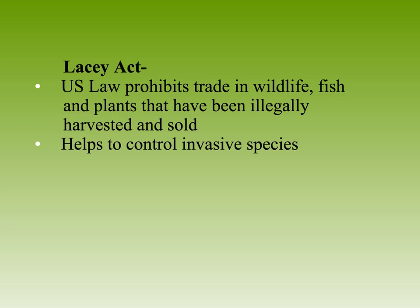Here are some ways we can restore habitats and try to get biodiversity back. Restoration tries to return things as close to the original as possible. Rehabilitation returns a degraded ecosystem back to being functional. Replacement is when the original ecosystem can't be recreated, so another ecosystem is introduced to bring some biodiversity back. We can also create artificial ecosystems, such as artificial wetlands for flood reduction, sewage treatment, and groundwater recharge — an important service that wetlands provide.